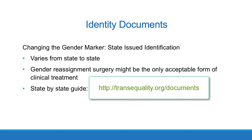The process of changing one's gender marker on state-issued identification varies from state to state. In some, but not most, states, gender reassignment surgery is the only acceptable form of clinical treatment. A state-by-state guide is available from the National Center for Transgender Equality at transequality.org/documents.